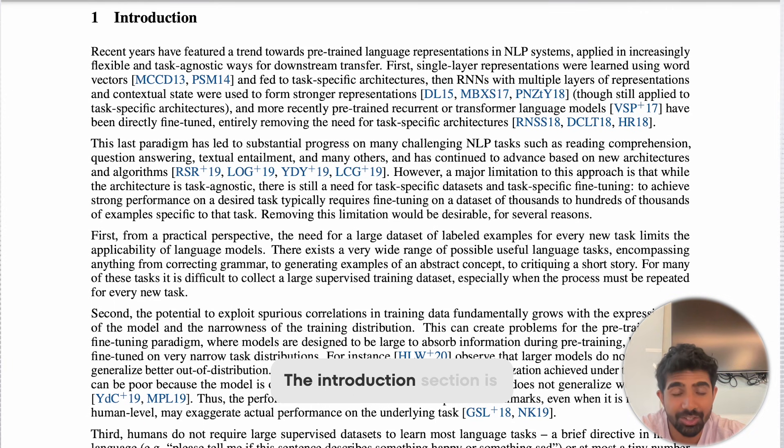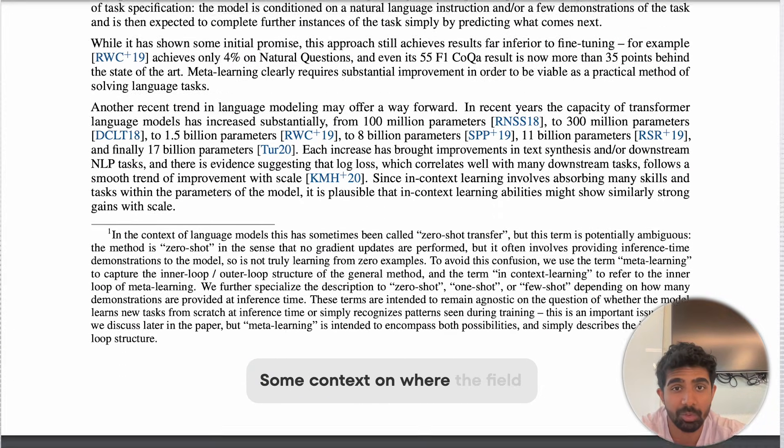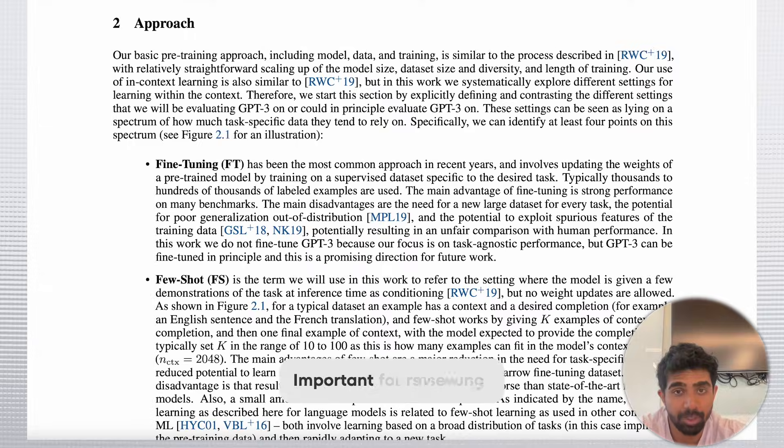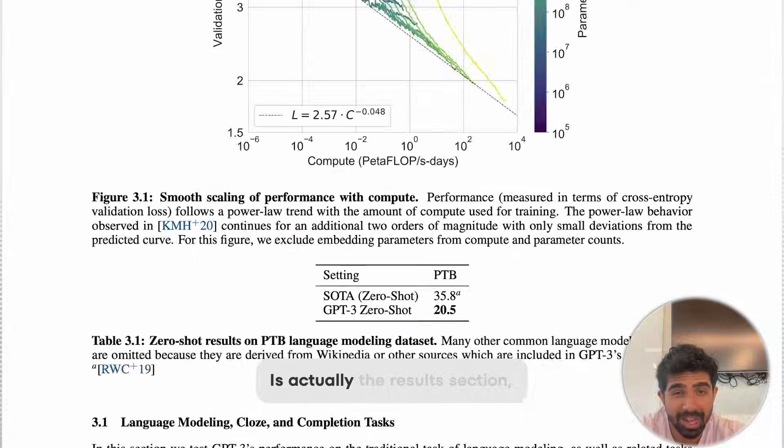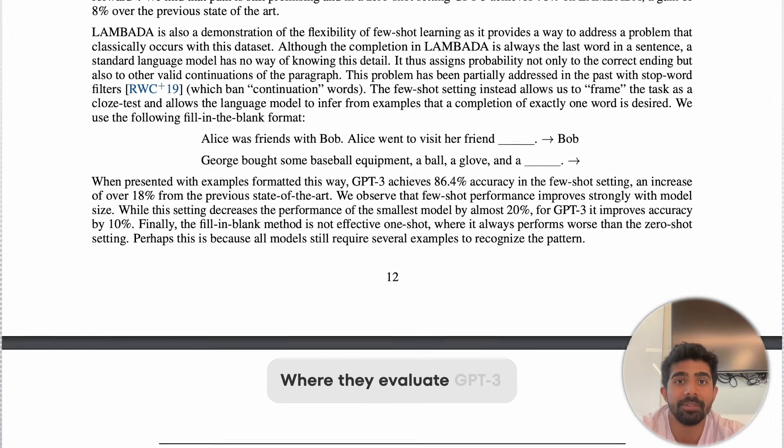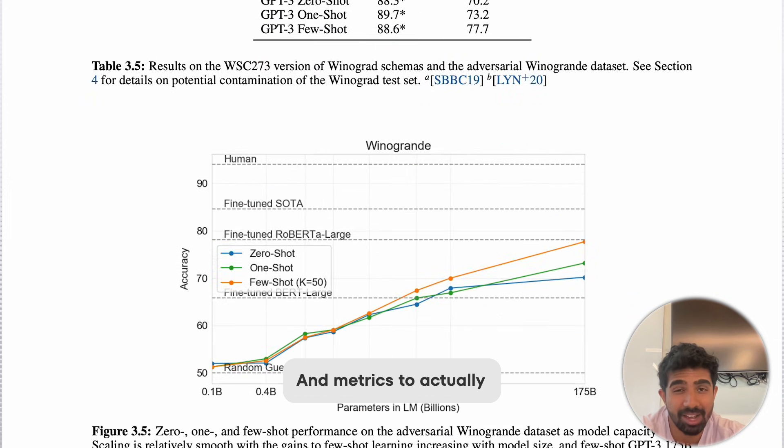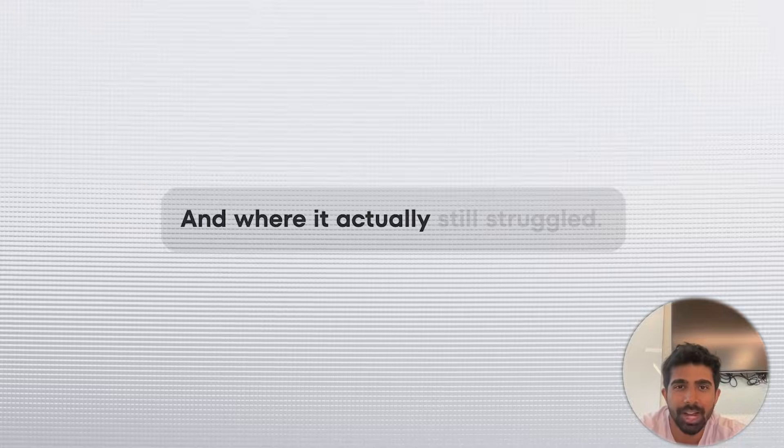Okay, but what sections do you read? The introduction section is actually really useful for gaining some context on where the field of NLP stood at this time. The approach section is, of course, important for reviewing how GPTs are even trained. And the bulk of this paper is actually the results section, where they evaluate GPT-3 on a ton of different benchmarks and metrics to actually assess its performance. Of course, you don't need to read every single line of this section and memorize these metrics, but it is cool to see where GPT-3 excels and improved and where it actually still struggled.